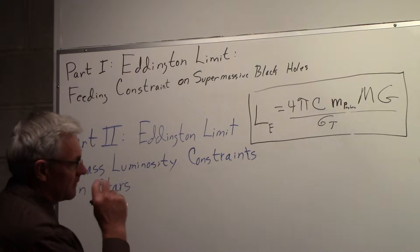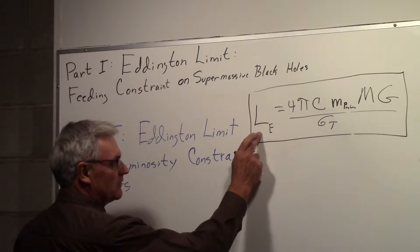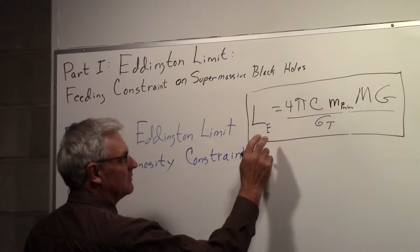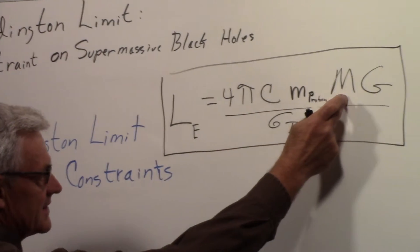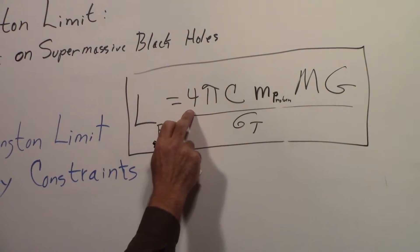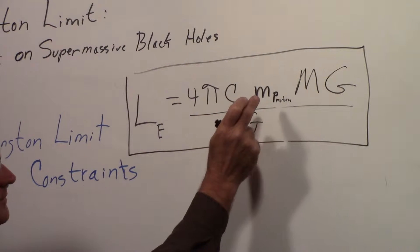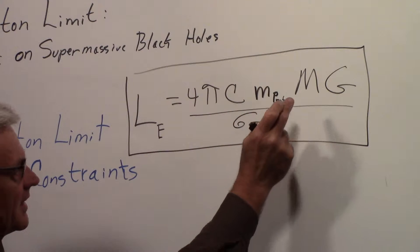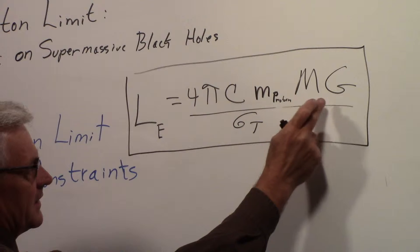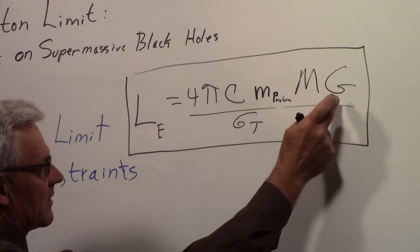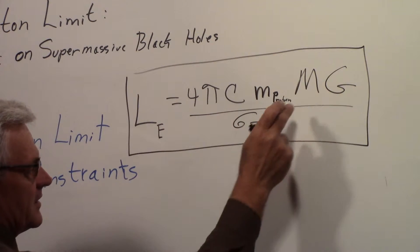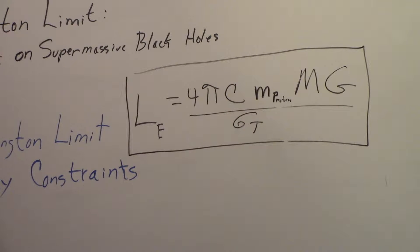We came up with the Eddington limit in terms of luminosity being equal to four pi times the speed of light, mass of the proton, the mass of the object supermassive black hole, gravitational constant, and something called the Thompson cross-section for electrons, sigma t.